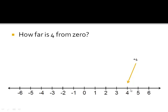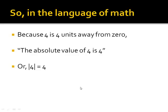How far is four from zero? It's four. So, in the language of math, because four is four units away from zero, the absolute value of four is four. Or, the absolute value of four is four.